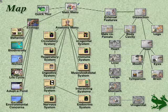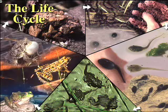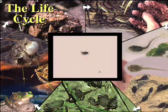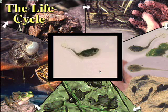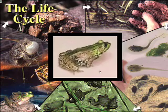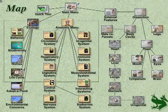Before we start dissecting, you have to see some of my favorites here. Here's the life cycle of a frog: the eggs, the tadpoles, and the juveniles. Click here to see the life cycle movie. An egg turns into a tadpole, turns into a frog. It's metamorphosis in five seconds or less.